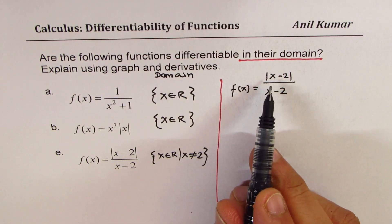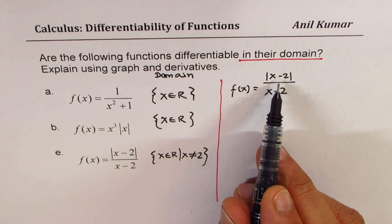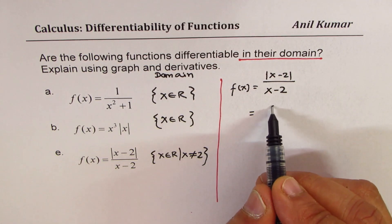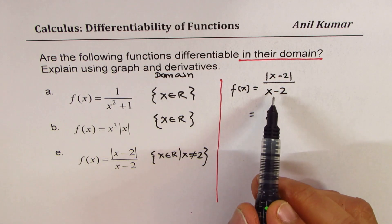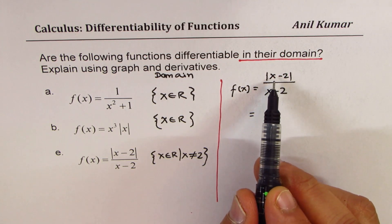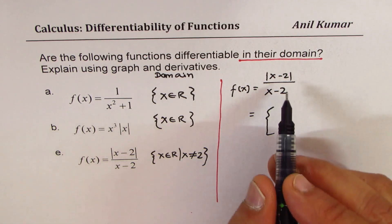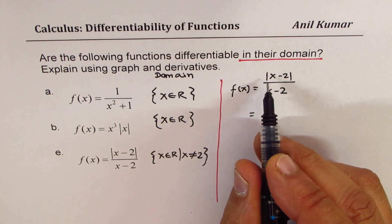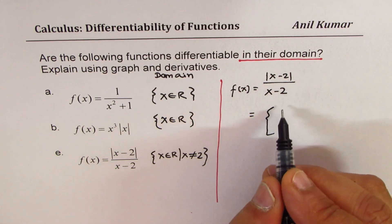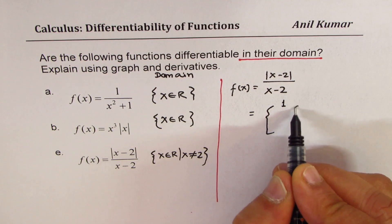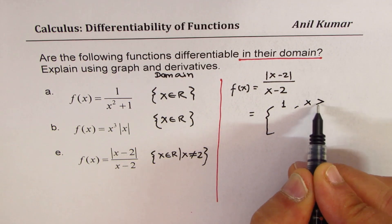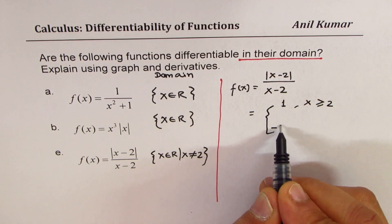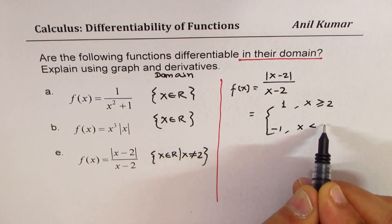Absolute functions can always be written as a piecewise function. I could write this function as: it equals positive 1 for x greater than or equal to 2, and negative 1 for x less than 2.